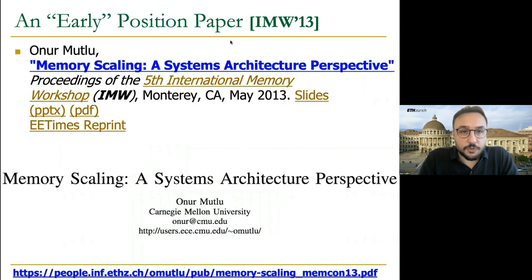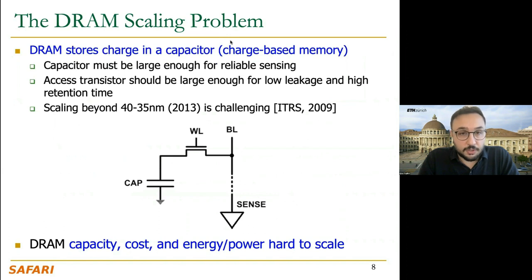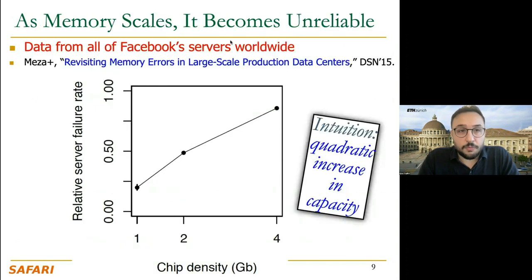I'd like to remind you of an early positioning paper from IMW 2013 about memory scaling, and in particular about the DRAM scaling problem. A DRAM cell consists of one capacitor and an access transistor, and stores one bit of data as an electrical charge on the capacitor. The capacitor must be large enough for reliable sensing, and the access transistor should be large enough for low leakage and high retention time. Unfortunately, both of these become challenging as we scale down the technology.